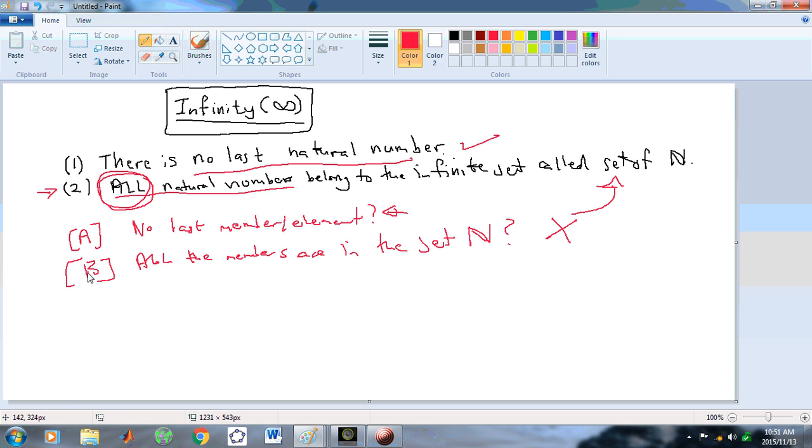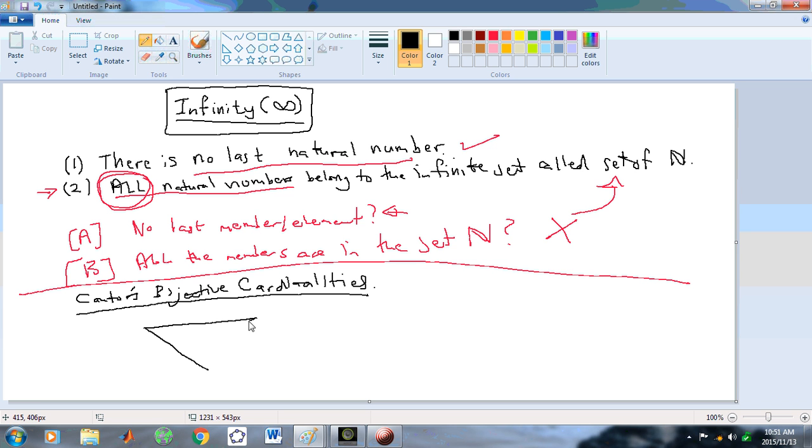By Cantor's definition, an infinite set is one which is not finite. So what does not finite mean? Does it mean no last member or element? Or does it mean all the members are in the set N? Which one of these two statements is true? After careful consideration, it becomes very clear that A and B are mutually exclusive. Only one of them can be true.